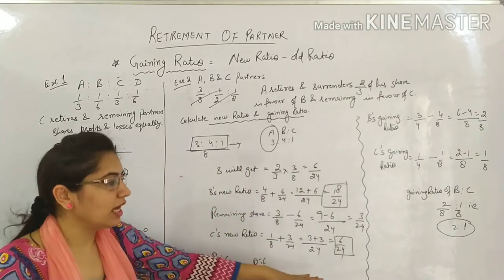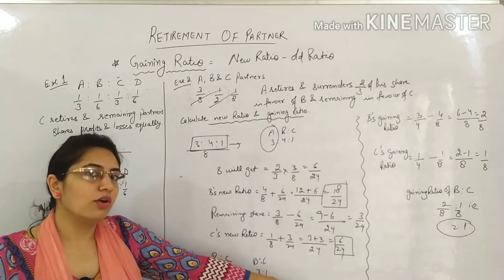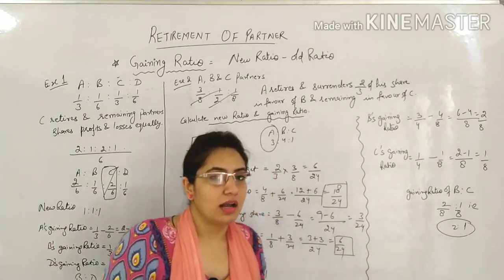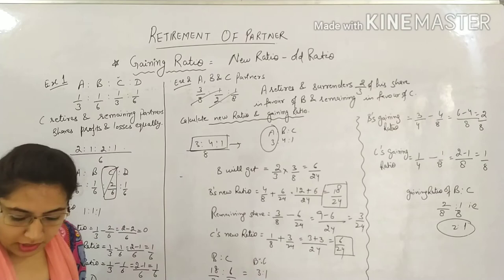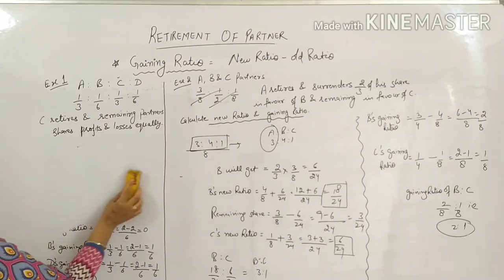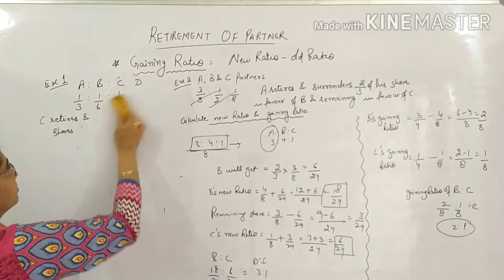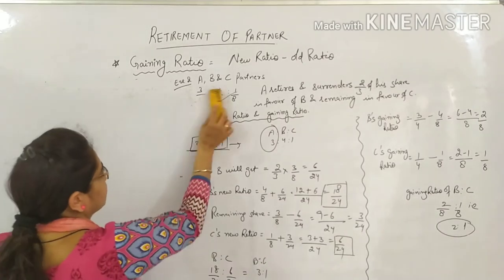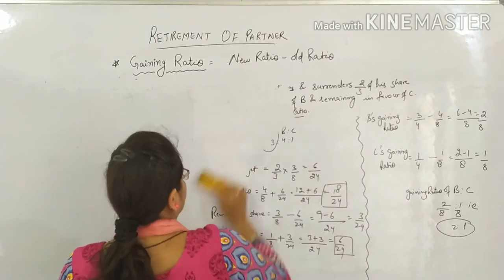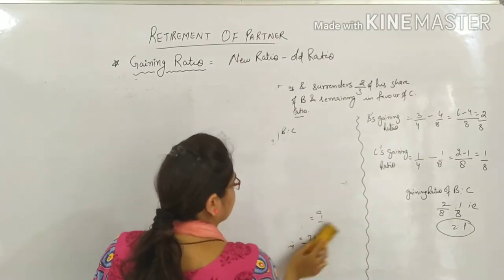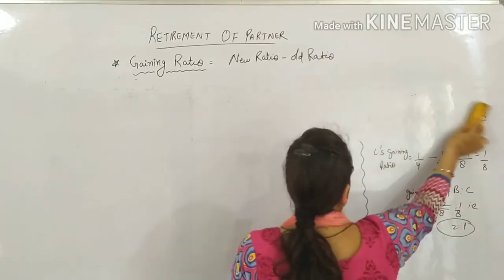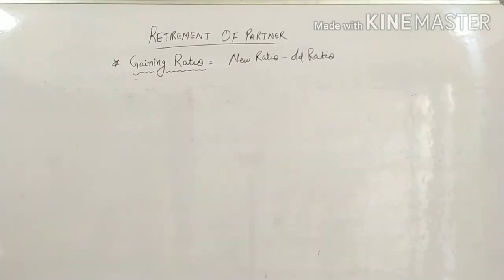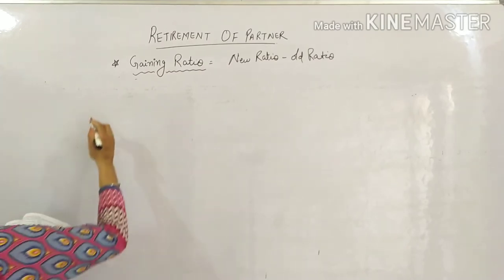So what you need to do is first learn the concept of calculating new ratio. If you know this thing well, then gaining ratio will also come out easily. Let's look at one more example, the concept will be fully covered. This concept is also given in your book, you can practice from the book once as well.